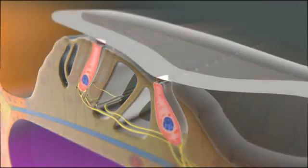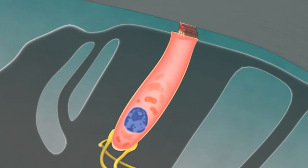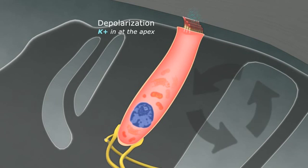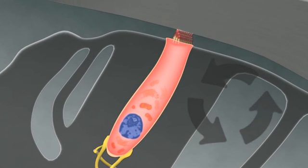The apical portion of the hair cell is bathed in high potassium solution, and the base of the hair cell is bathed in potassium poor solution. This establishes that potassium flow through the cell is used for both depolarization, potassium in at the apex, and repolarization.